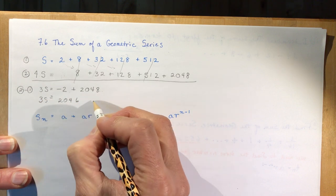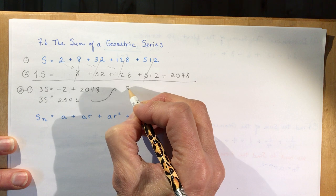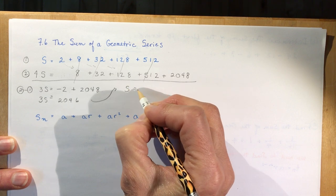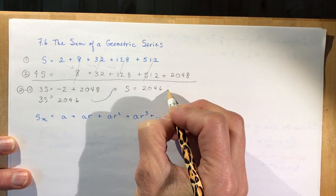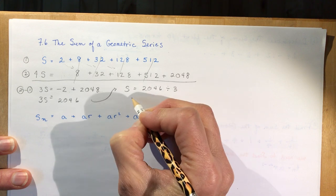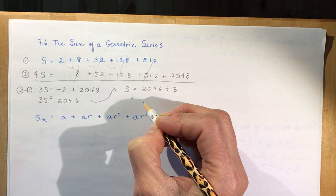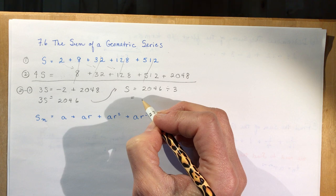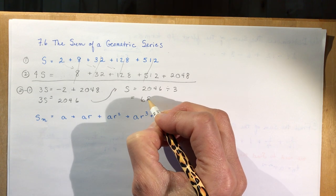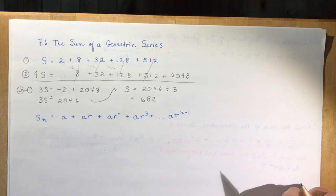So adding those two numbers together: 2048 minus 2 is 2046, and that's 3S. To get 1S, I bring it over — S is going to be 2046 divided by 3, and that gives you 682.